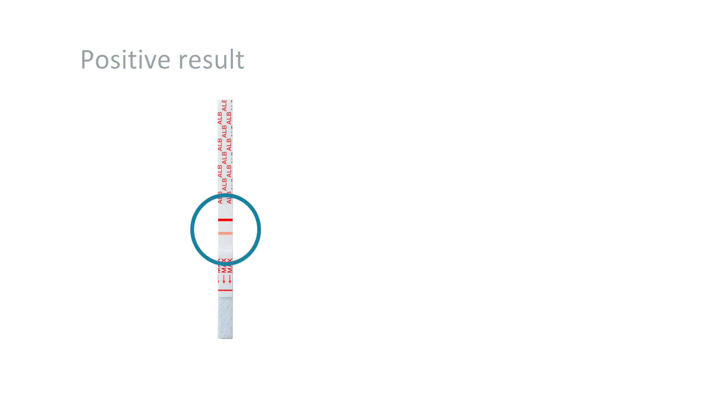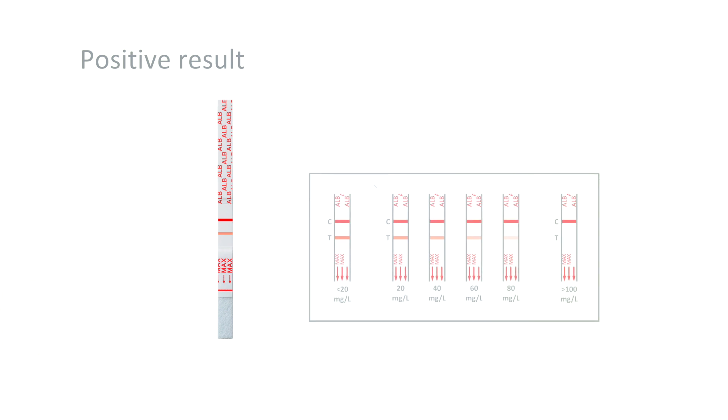A pale test line also indicates a positive result. Its color intensity however mustn't be stronger than the less than 20 mg per liter line on the color scale given in the instructions. This color scale allows you to classify your result within different concentration ranges.